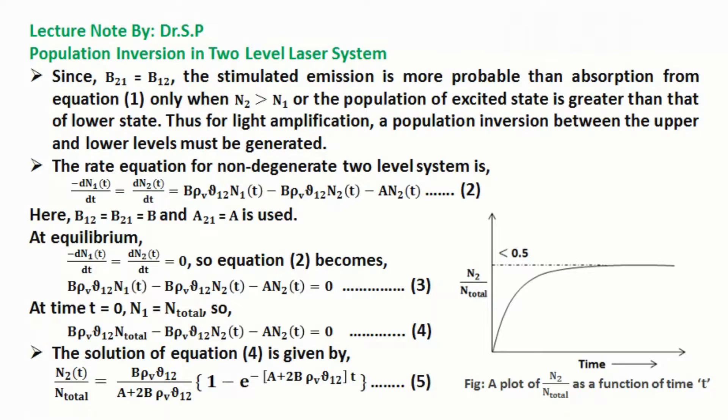Since B21 is equal to B12, the stimulated emission is more probable than absorption from equation 1 only when N2 is greater than N1, or the population of excited state is greater than that of lower state. Thus for light amplification, a population inversion between the upper and lower levels must be generated.